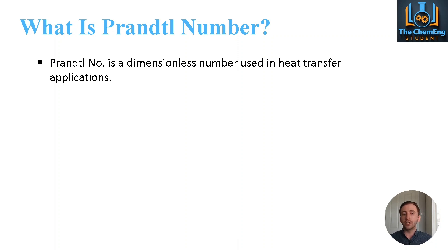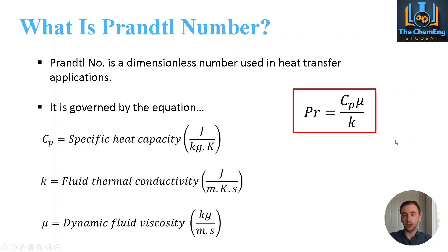So the first question is what is Prandtl number and essentially it's one of many dimensionless numbers which in this case is used in heat transfer applications and it's governed by the following equation. It's normally abbreviated to Pr and it is a function of the specific heat capacity which is Cp, the dynamic fluid viscosity which is μ, and the fluid thermal conductivity which is k.